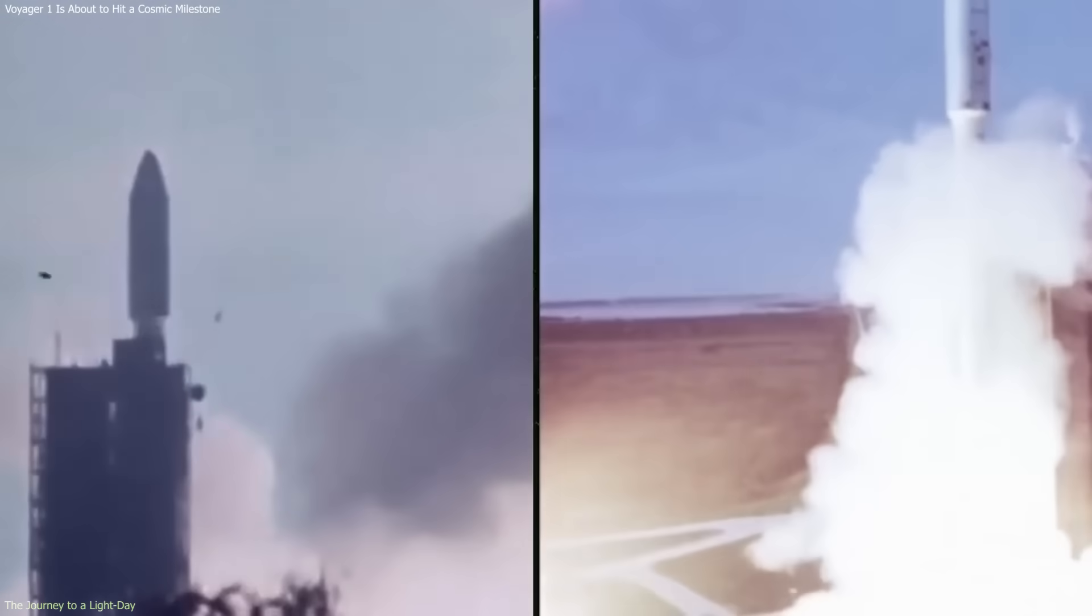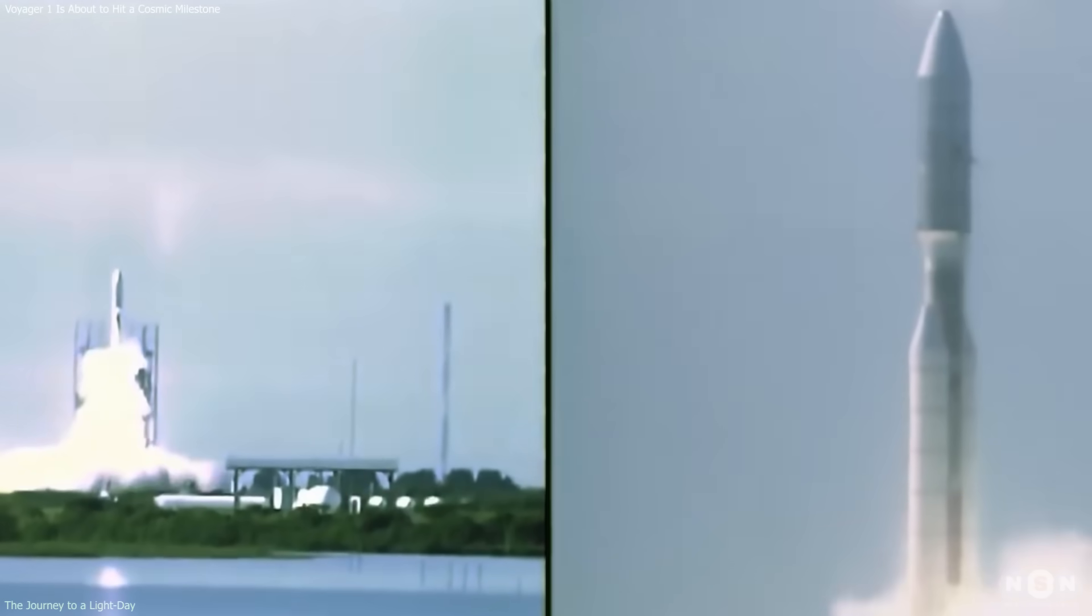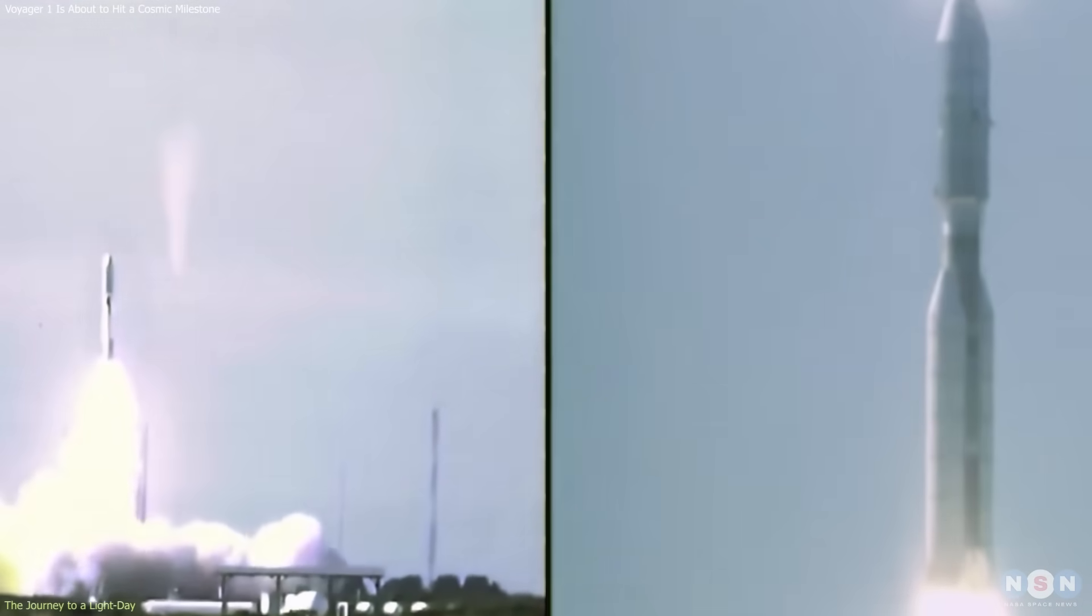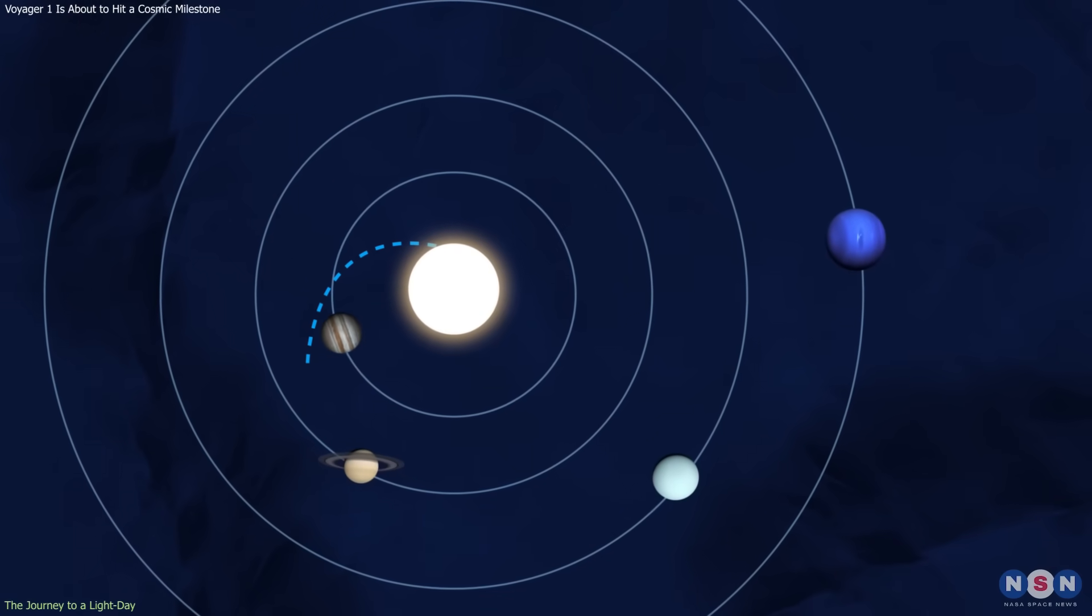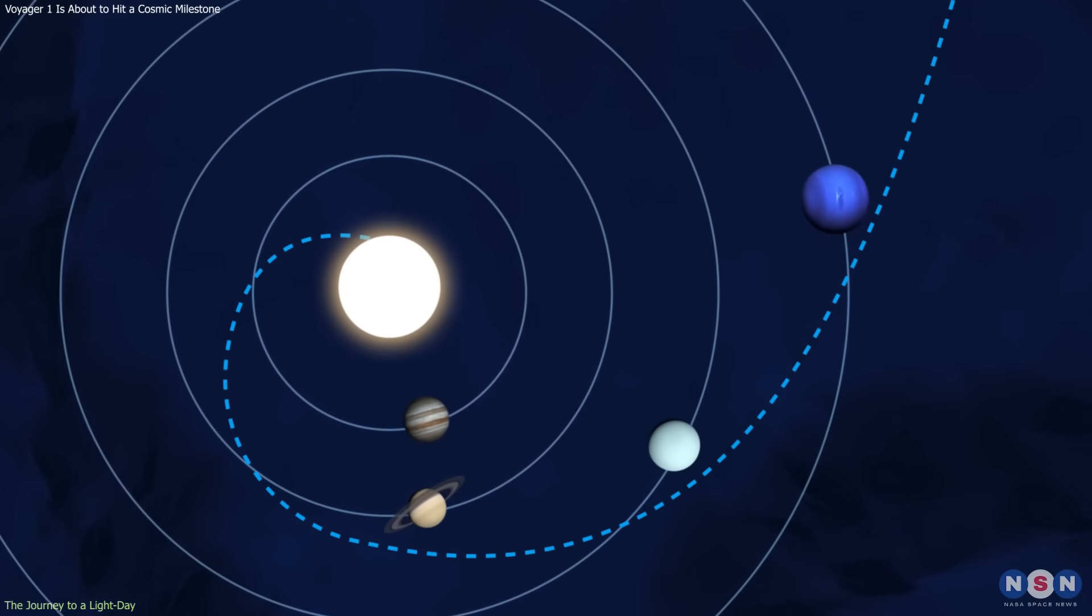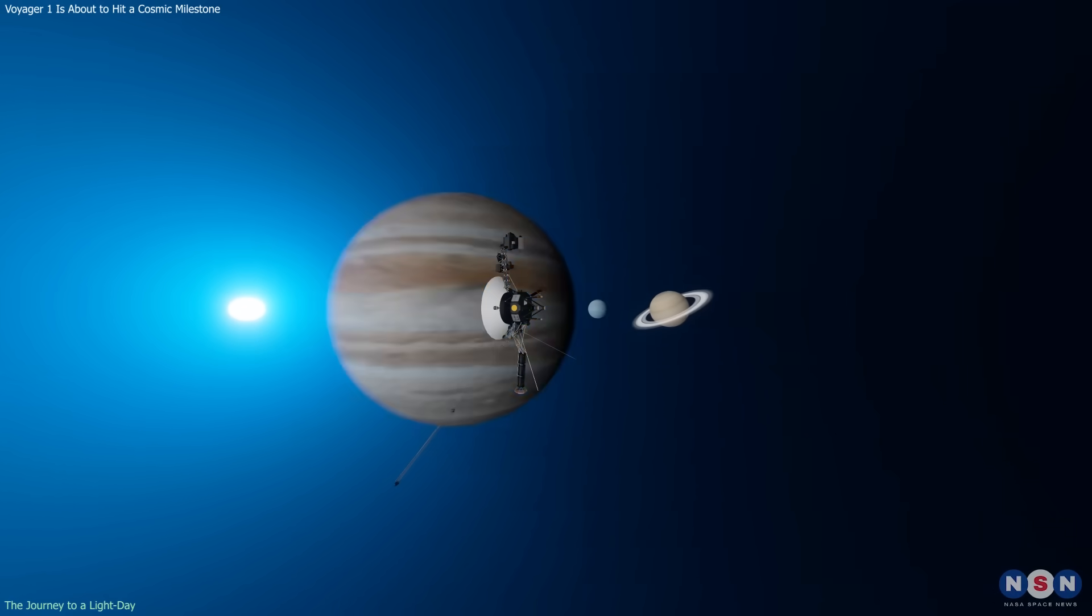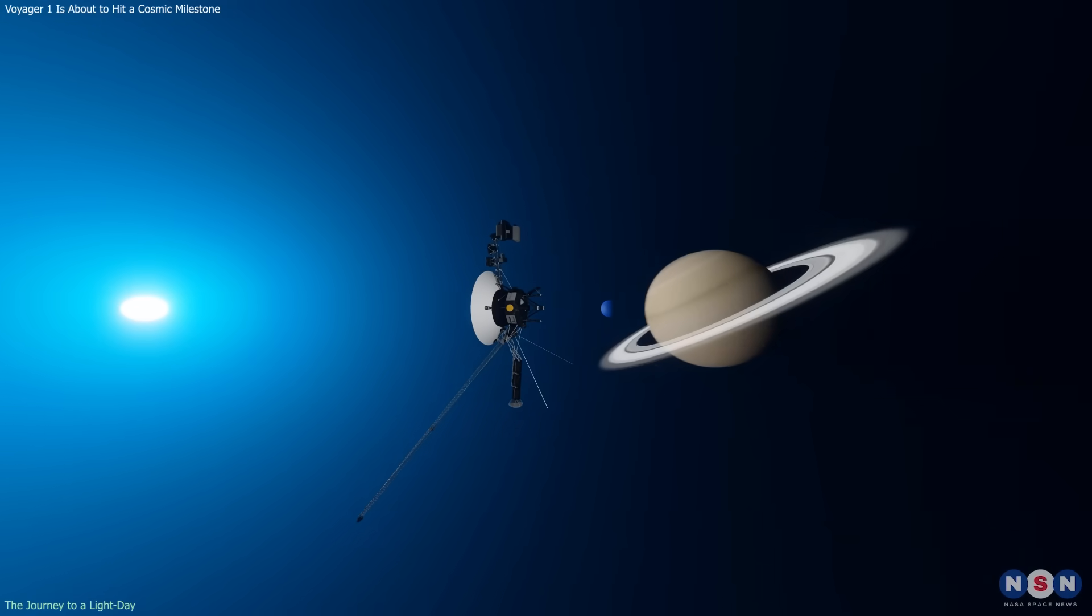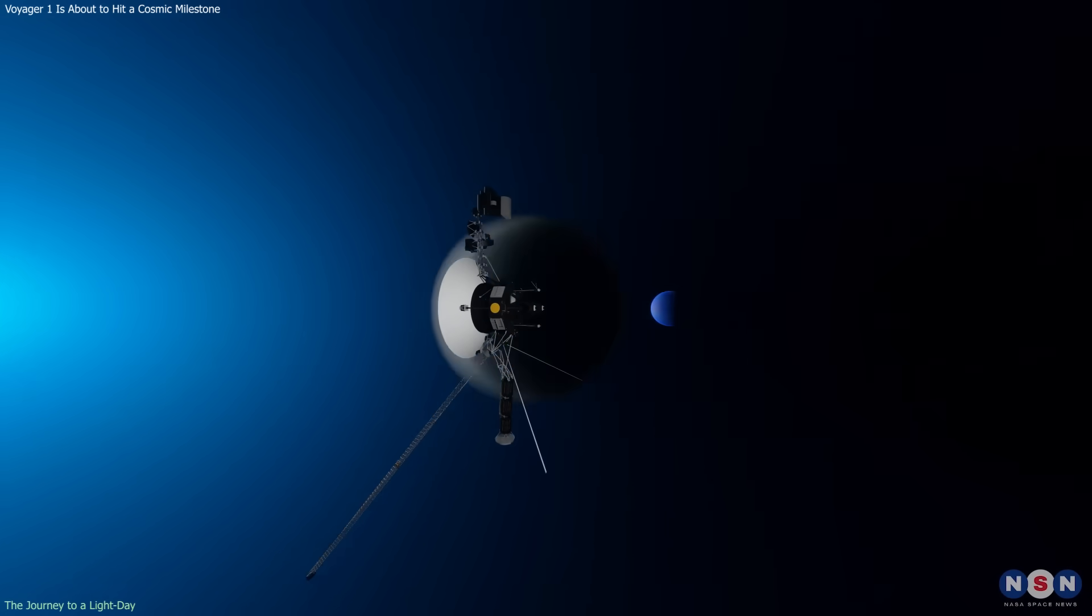Voyager 1 was launched on September 5th, 1977, just weeks after its twin, Voyager 2. Both missions were timed to exploit a rare planetary alignment, enabling a sequence of gravity assists using the pull of Jupiter and Saturn to slingshot the probes toward the outer solar system and beyond.